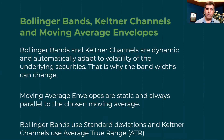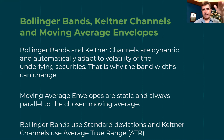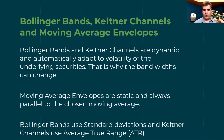The key difference between Bollinger Bands, Keltner Channels, and moving average envelopes is that Bollinger Bands are very dynamic - they automatically adjust to volatility, so the width can narrow or expand. Keltner Channels are also dynamic, adjusting quickly to volatility. The moving average envelope, on the other hand, uses a fixed percentage above and below the moving average, so it's pretty static and parallel - it does not adjust to volatility, which can be a limitation but also a benefit.